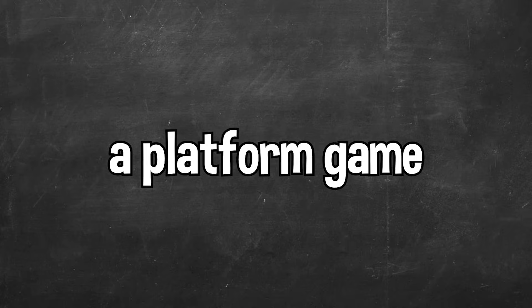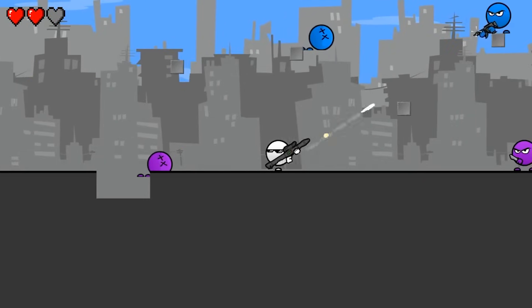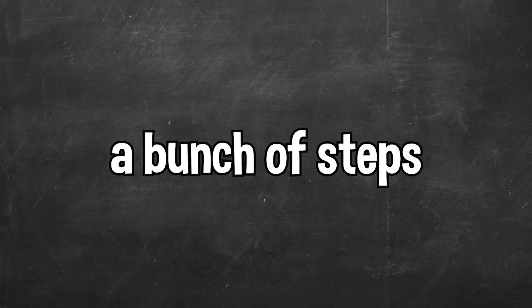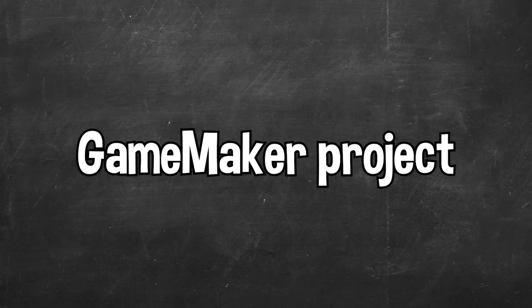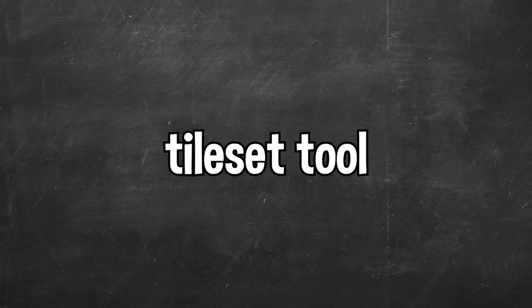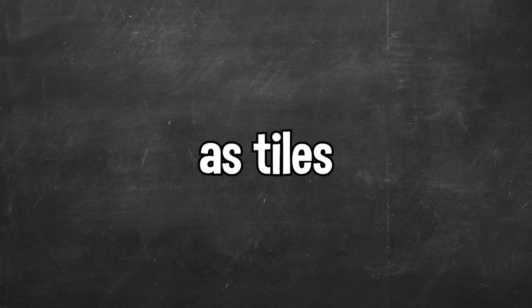To get started, I needed to ask ChatGPT how to make a platform game. Now I've made platform games before, but I wanted to make it the exact way that ChatGPT told me, so I asked how do I make a platform game in GameMaker? ChatGPT gave me a bunch of steps. I started by creating a new GameMaker project and designing a level, downloading free assets from itch.io and implementing them. To build the level, I used GameMaker's tileset tool, which allowed me to easily use sprite sheets as tiles.